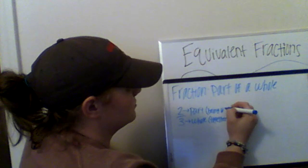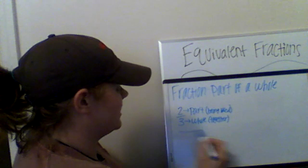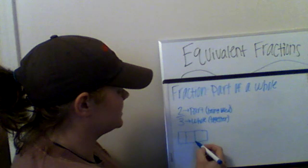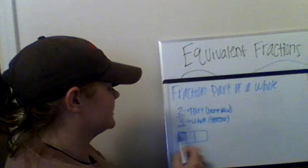So if I was to represent two-thirds using a picture, my two is my part that I'm using, and my three is my whole. So I'm going to split my object into three parts because three is my whole. The two comes into play because I'm using two parts of that.